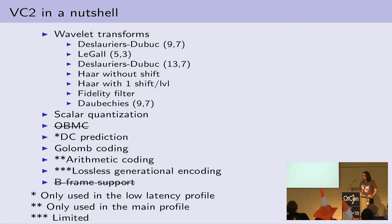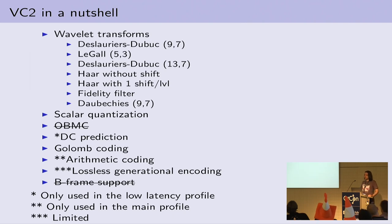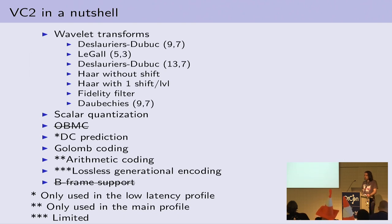VC2 in a nutshell: VC2 was standardized by the SMPTE in 2011, and what it was is basically a standardization of Jirac Pro. Jirac Pro was started in parallel with Jirac, and it was basically an intra-only version of Jirac — no OBMC, nothing. Just straight up transform your plane, quantize it, send it over, and that's it.